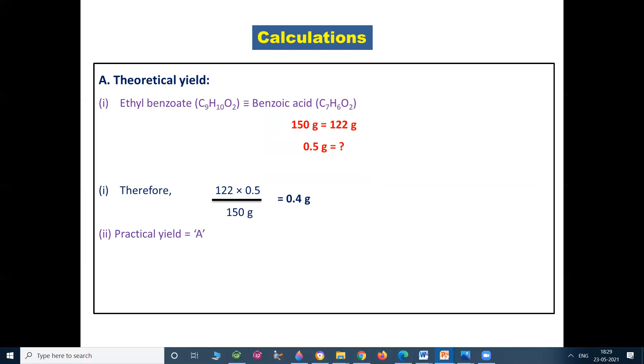Let us calculate the practical percent yield. The practical yield is obtained by weighing of the product. The practical percent yield: since 0.4 g of product equals 100% yield, therefore A into 100 upon 0.4 gives the practical percent yield.